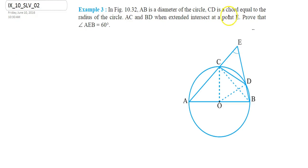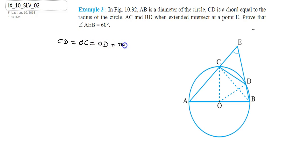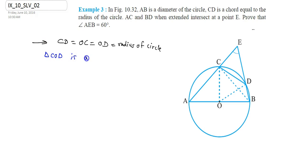In this question, CD is a chord equal to the radius of the circle — CD equals OC, OC is the radius of the circle, and OD is also the radius of the circle. So CD equals OC equals OD equals the radius of the circle. Looking at triangle OCD, all three sides are equal, so triangle OCD is an equilateral triangle.